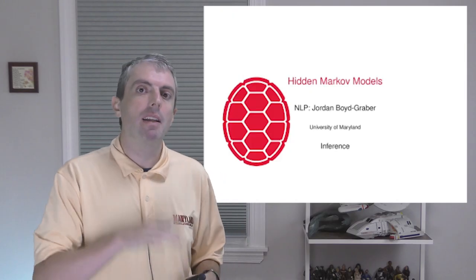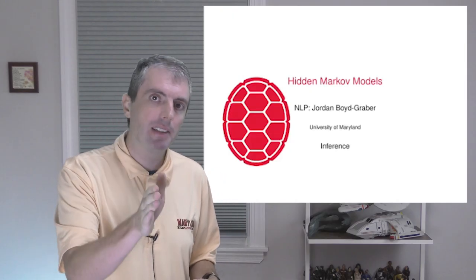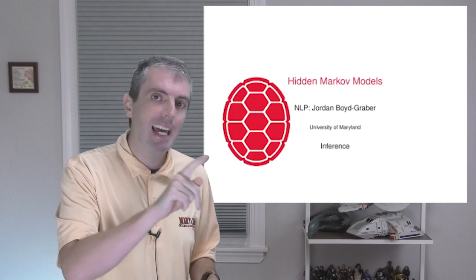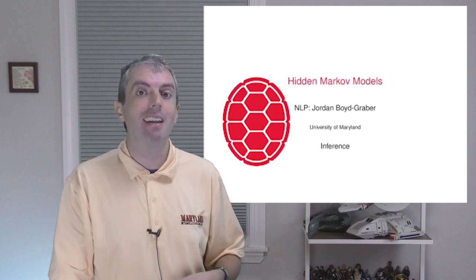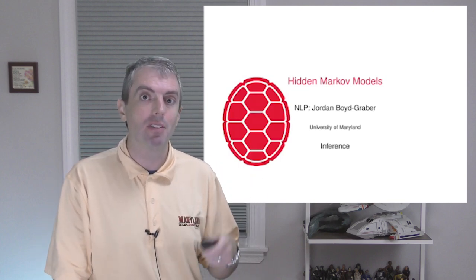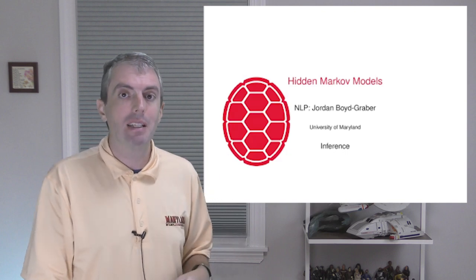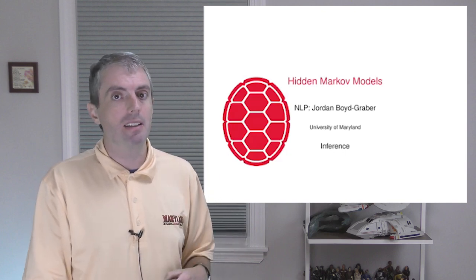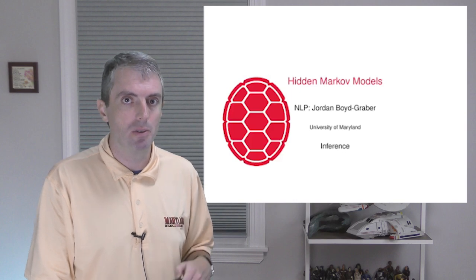In the previous videos we talked about what a hidden Markov model is, how you estimate its parameters given data, and now the question is how do you figure out how to actually get part-of-speech labels given an input sentence. This problem is called inference, and we'll use a technique called Viterbi decoding to do just that.